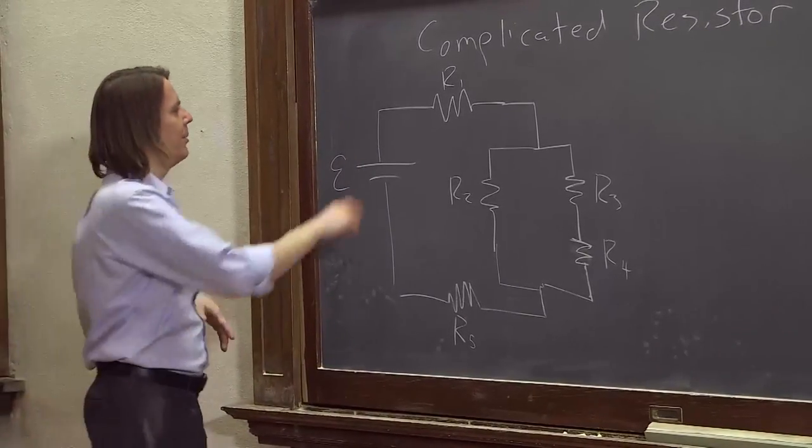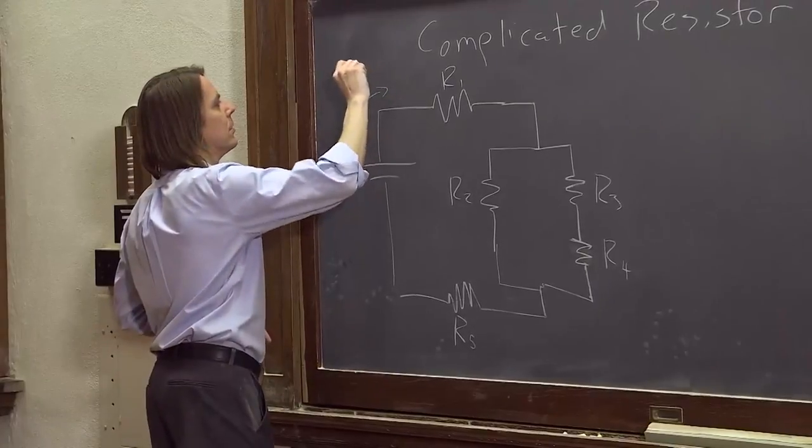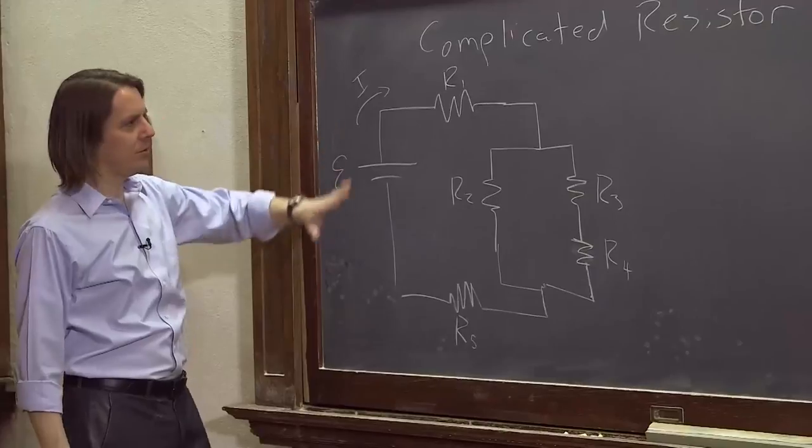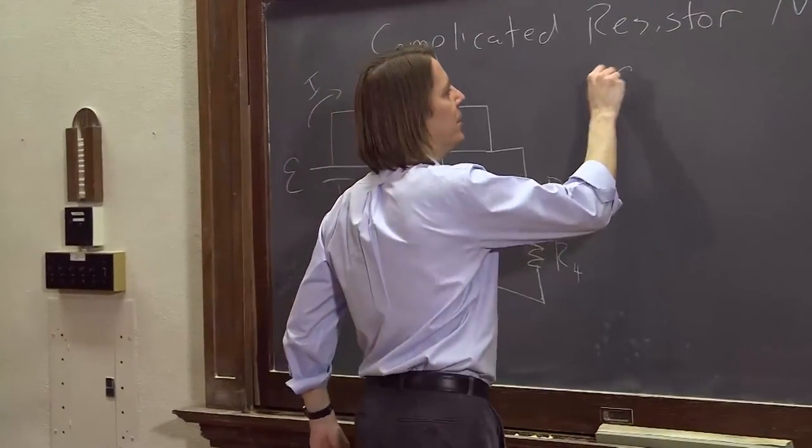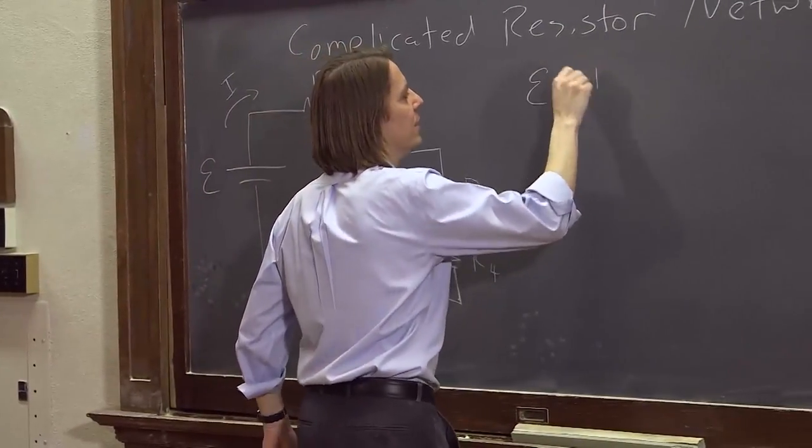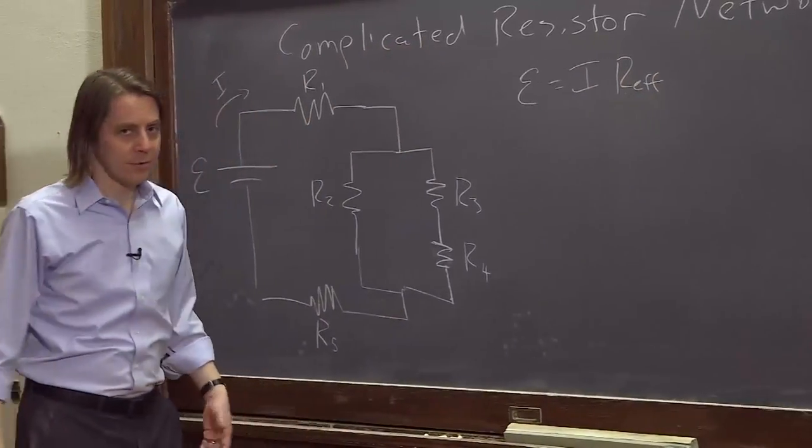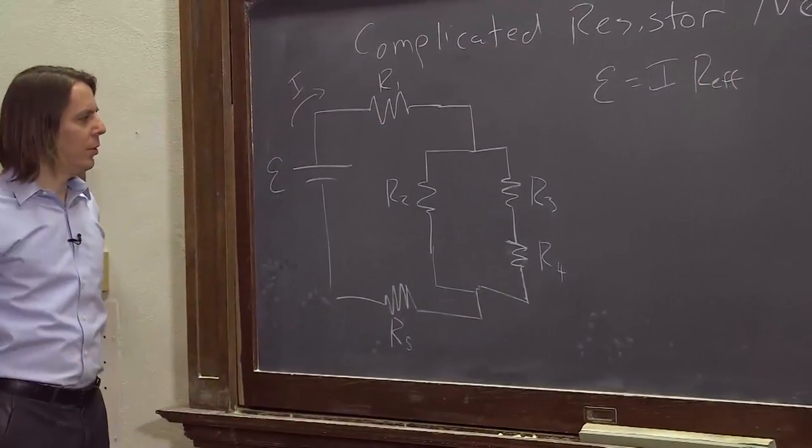So the question is, how much current is going to flow through there? Well, we start out just like before. The battery, all it sees is wires. So we know that the EMF will send out some current times the effective resistance. So what is the effective resistance?